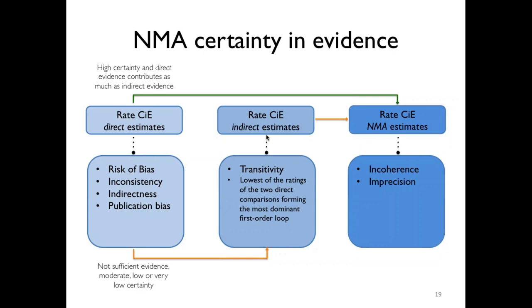What this part relates to — the lowest of the ratings of the two direct comparisons forming the most dominant first-order loop — is essentially that when there are concerns about intransitivity, you use the lowest certainty of evidence from the two direct comparisons. The first-order loop refers to the most direct of the indirect data. So if there is intransitivity, you use the lowest rating of these two direct comparisons to appropriately present the evidence. Because if you find there is only indirect evidence and you have two pieces of indirect evidence, if you don't have good reasons to pick one over the other, you should express the lowest certainty in the evidence by picking the lowest of the direct comparisons. That's the rationale behind it.